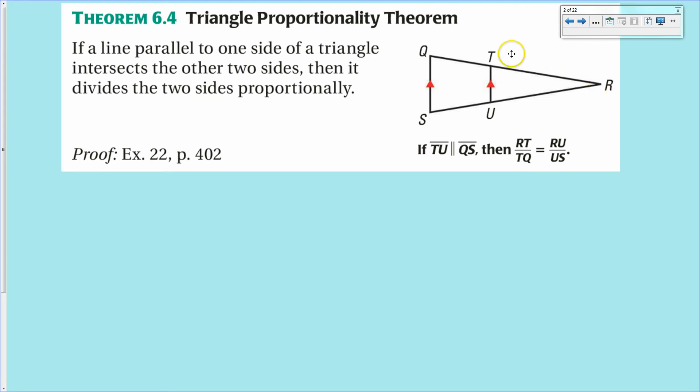This says that this short segment here is going to share the same proportion between that, or share the same ratio between RT to TQ as RU to US. If you color code it, it looks like this. So you can see that that line, the longer segment to the shorter segment is going to share the same ratio as the long segment here to the shorter segment there.